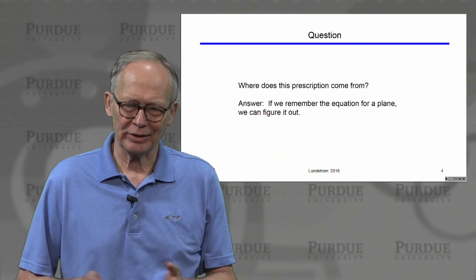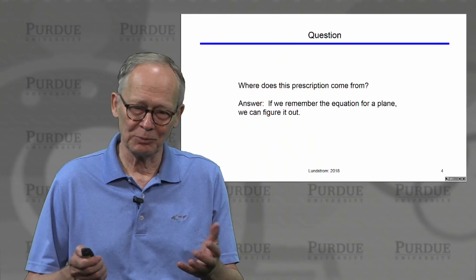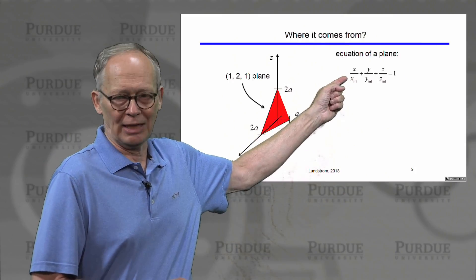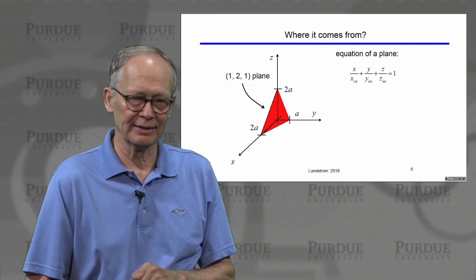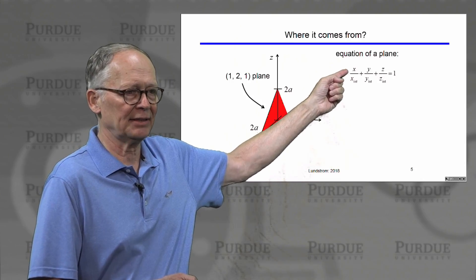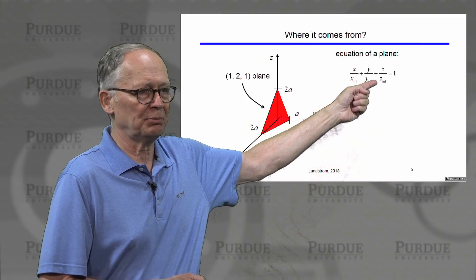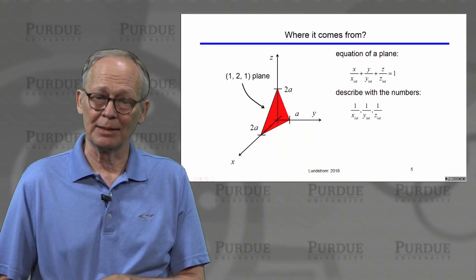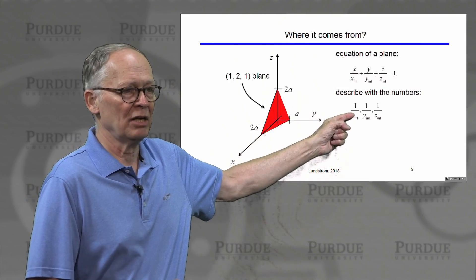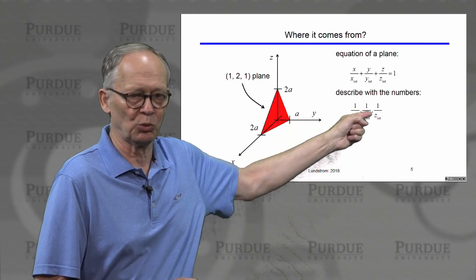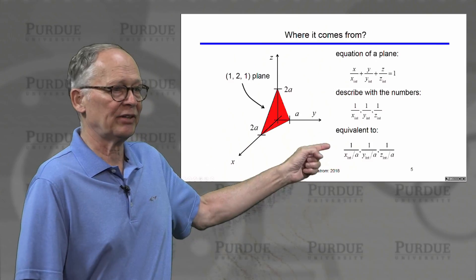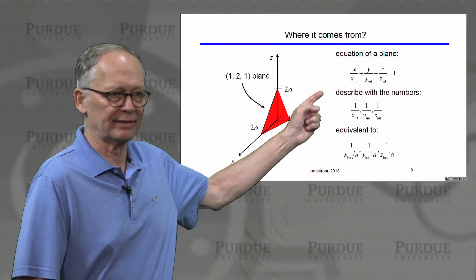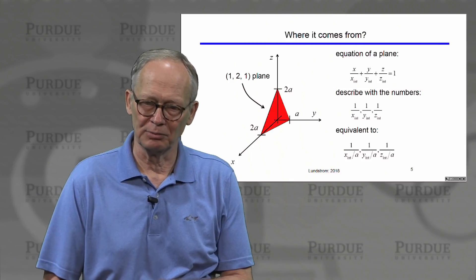Now you might ask, where does this prescription come from? We can remember it if we understand the equation for a plane. A plane is described by x over the x-intercept, plus y over the y-intercept, plus z over the z-intercept, equals one. The important elements are the three numbers: 1 over x-intercept, 1 over y-intercept, 1 over z-intercept. Since we're doing everything in units of lattice spacing, we express each intercept in those units, then rationalize them to get a set of integers. That's where the prescription for Miller indices planes comes from.